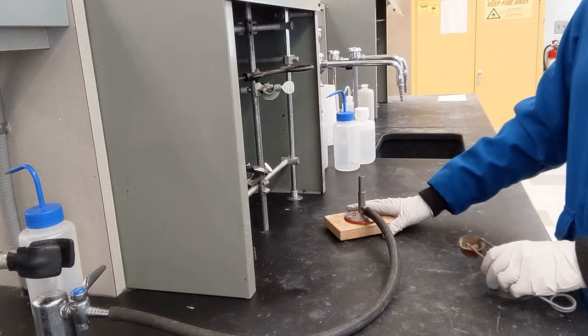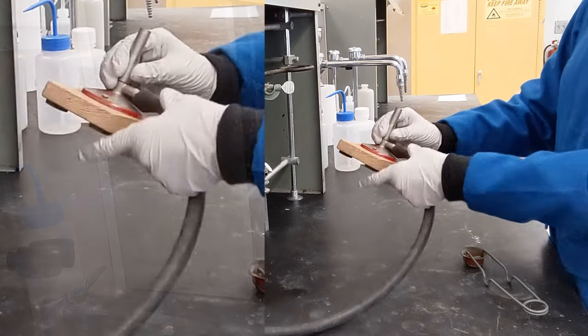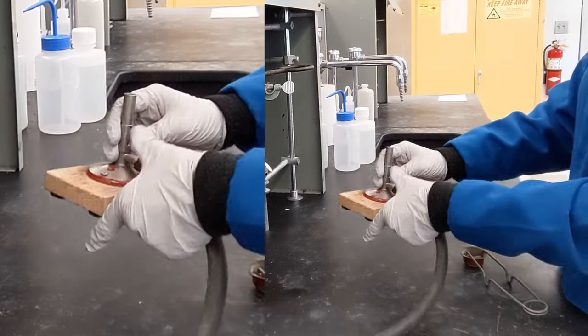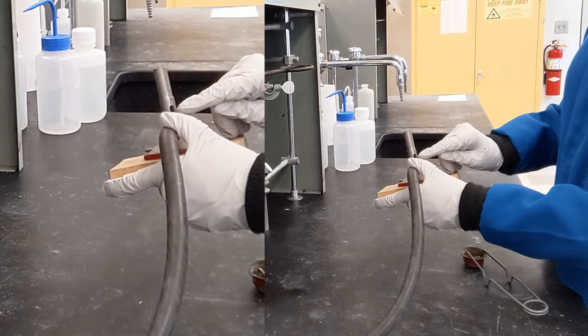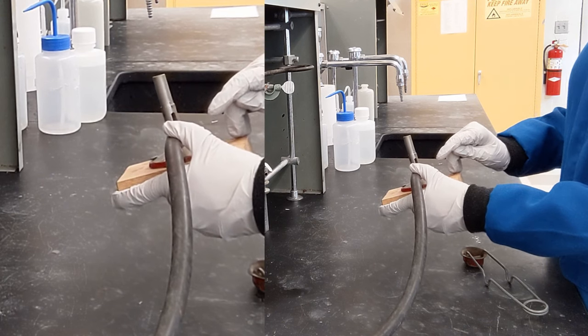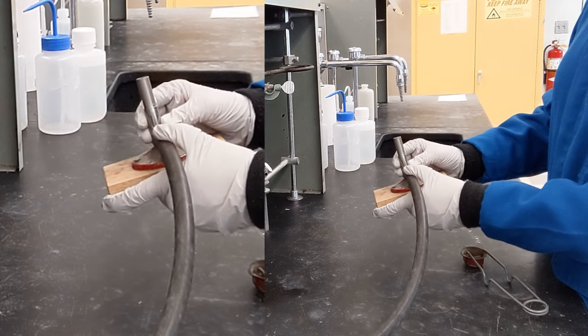Now the Bunsen burner. There is a collar that I can turn to control the amount of oxygen that gets inside. So right now it's all the way open. This should allow the maximum amount of oxygen to get in.